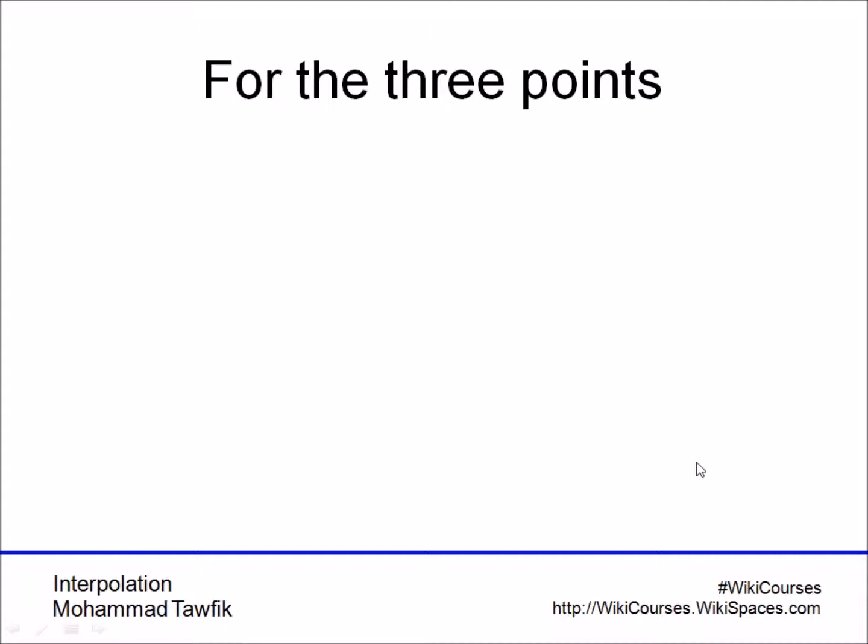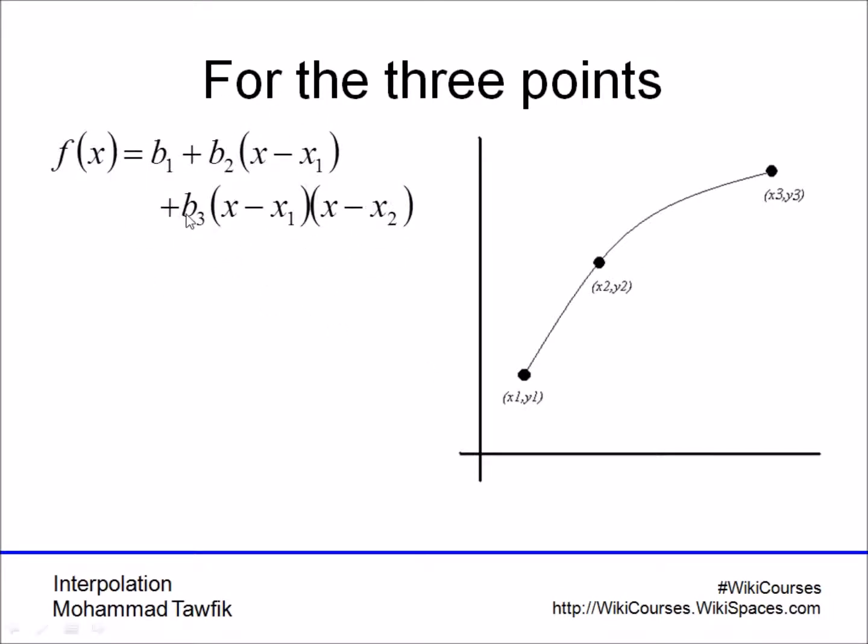If we have three points now, we will propose a parabola, but in a little bit different way. Here, we will say that the proposed interpolation function f of x is equal to b0 plus b2 times x minus x1, which is the linear part. But now we are going to add a second order part, which is b3 times x minus x1 times x minus x2.